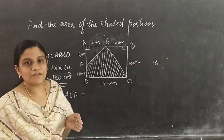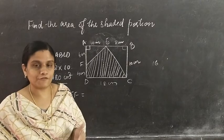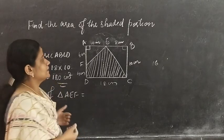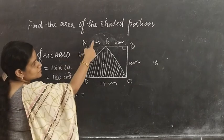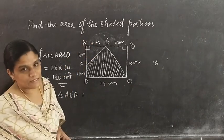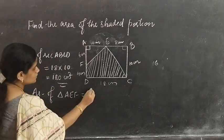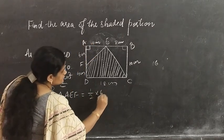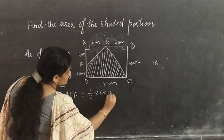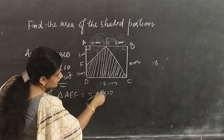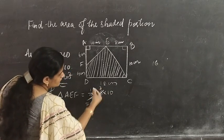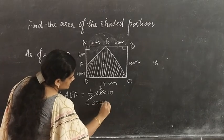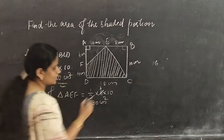Area of a triangle equals half into base into height. That is half into 6 into 10. We can cancel, giving 30 cm square.